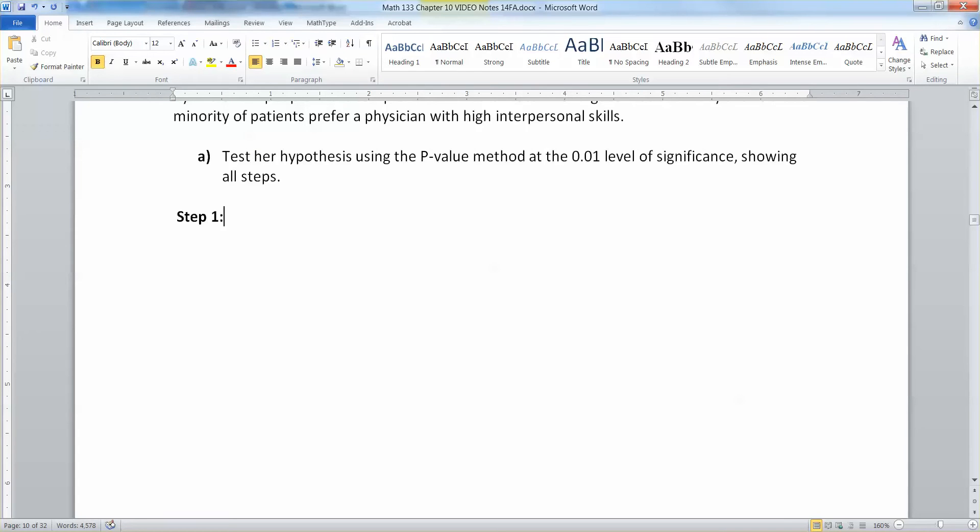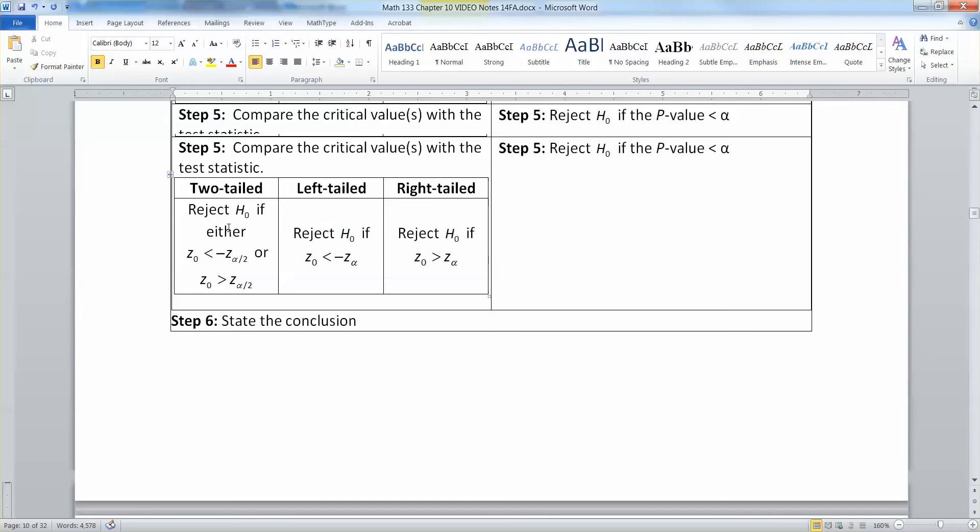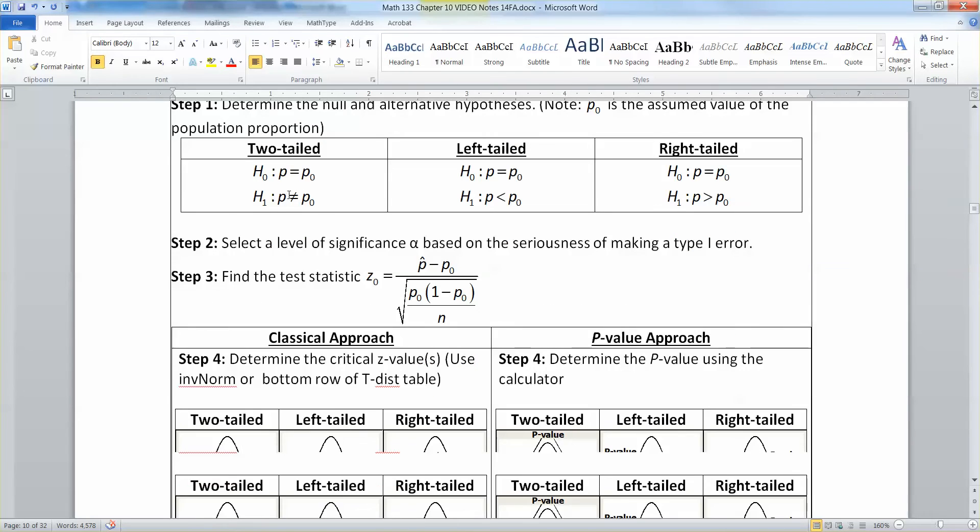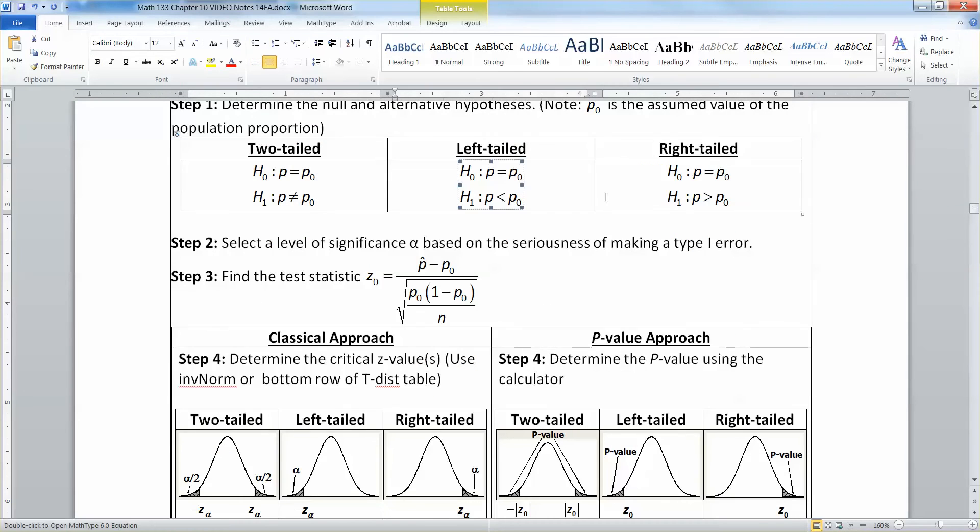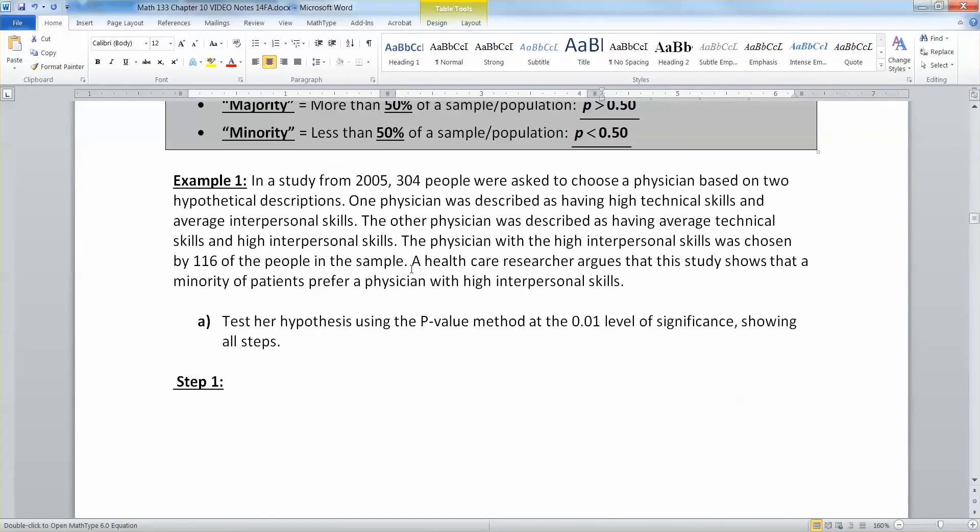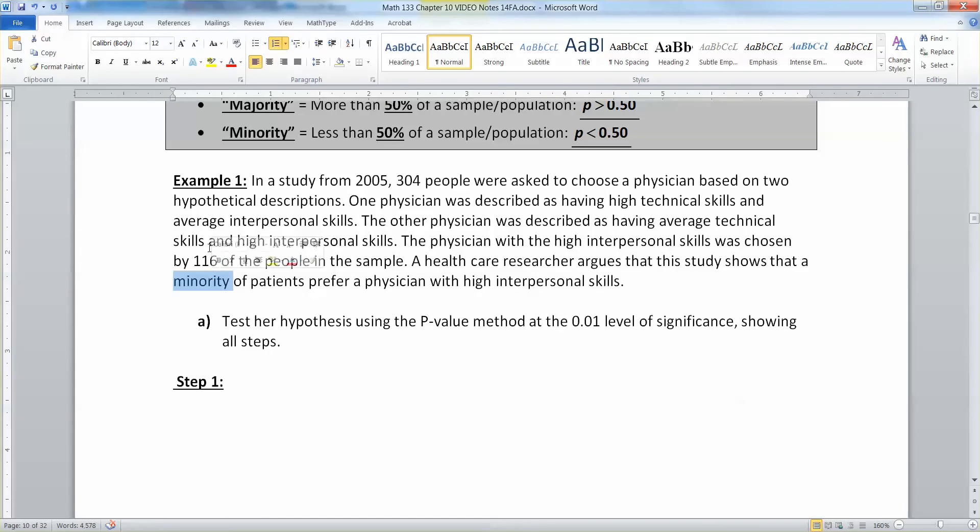Step one, we need to create our hypotheses. Alright, so hypotheses are either left-tailed, right-tailed, or two-tailed. So, if she was arguing that they're not equal to, that would be a not equal, less than, greater than. So, where is that in this entire paragraph? The answer is this right here, the word minority.